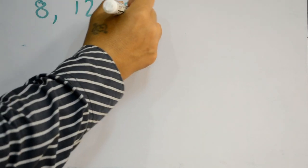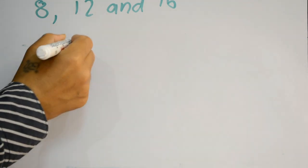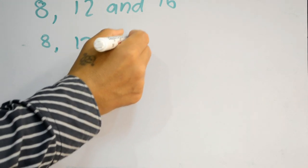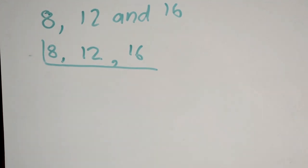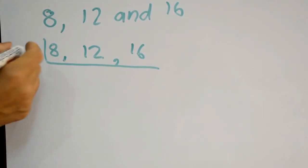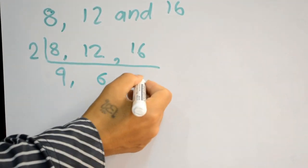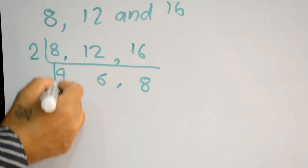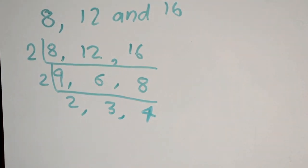Let's take another example: 8, 12, and 16. Write all these numbers together and draw the L symbol. These are even numbers, so they are divisible by 2. Dividing: 2 times 4 is 8, 2 times 6 is 12, 2 times 8 is 16. Dividing by 2 again: 2, 3, 4.